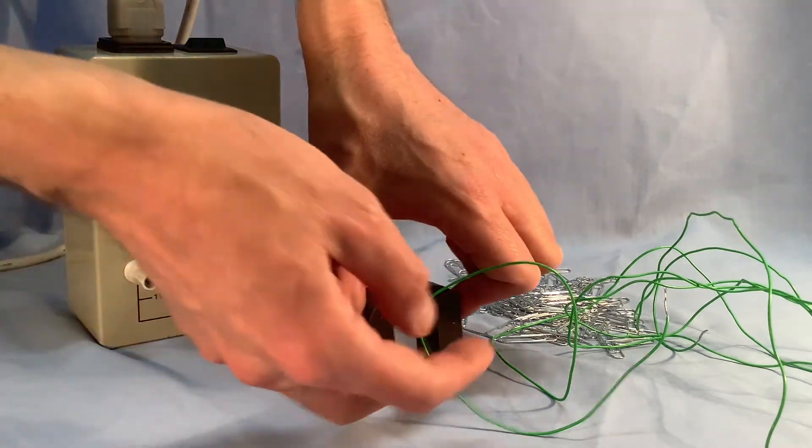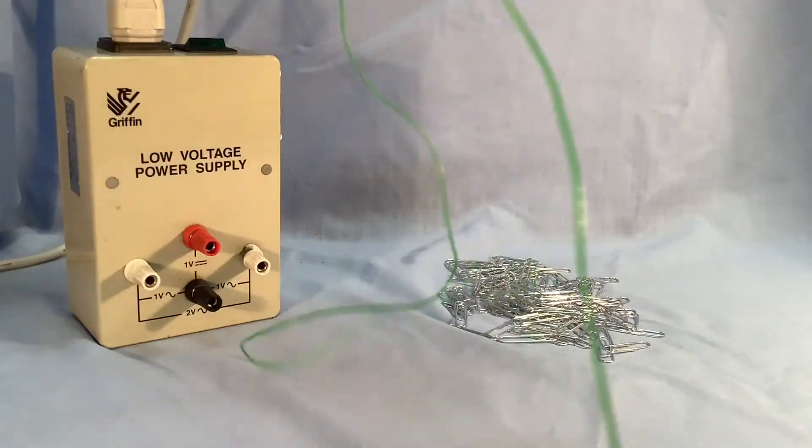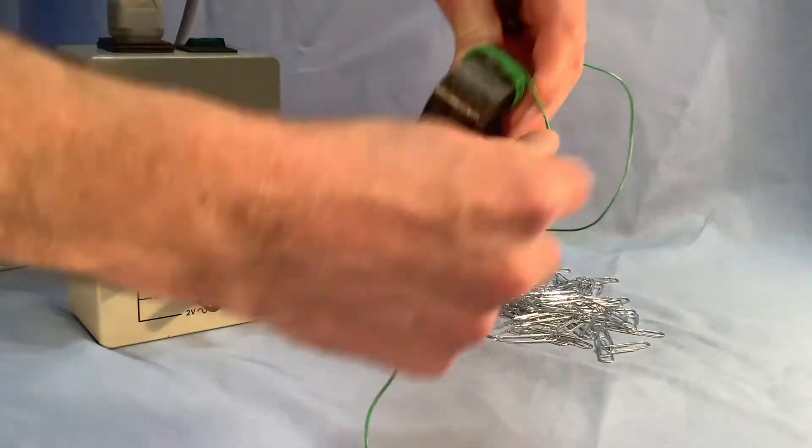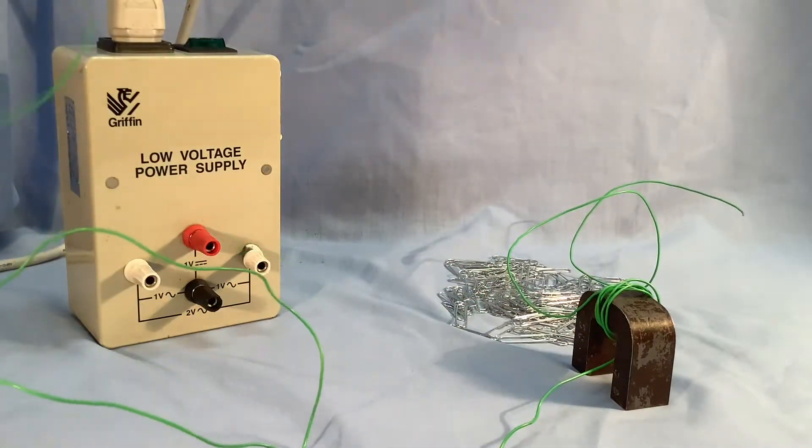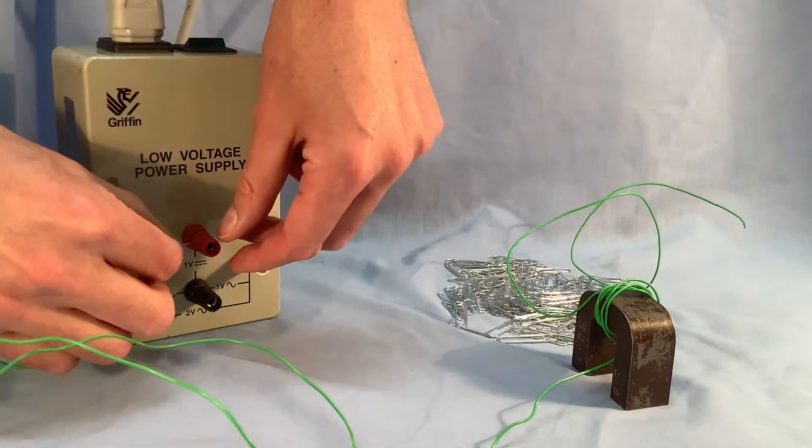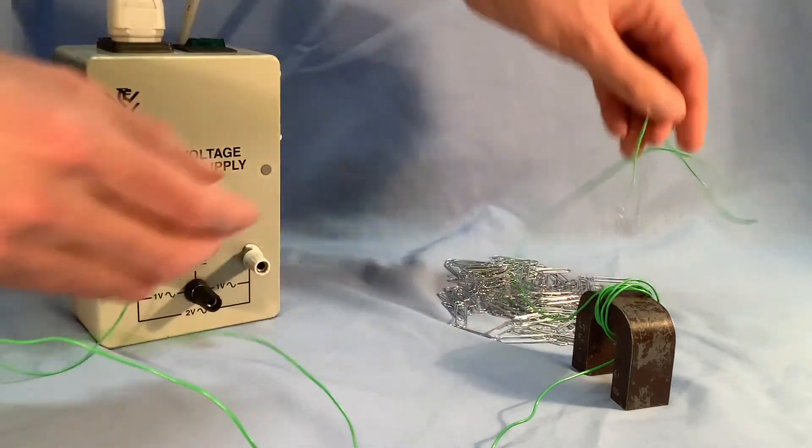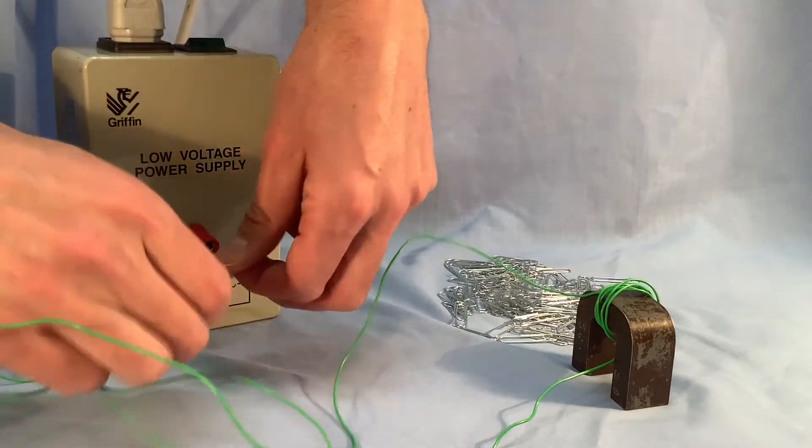So to demonstrate this quickly, I'm going to start off by making five turns on here. One, two, three, four, five. And then I'm going to connect my wire to the power supply. Once I have connected this to the power supply, I can switch it on for a short time. I don't want to leave it on very long.